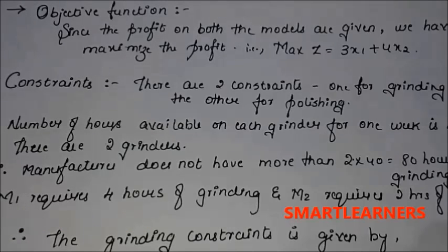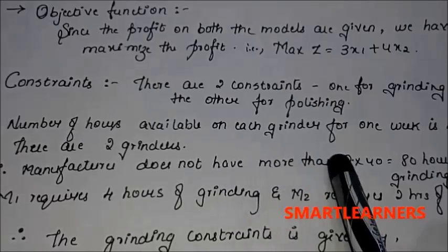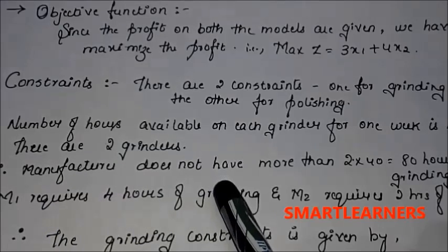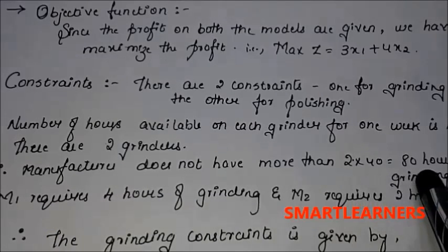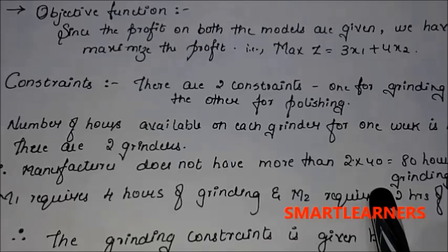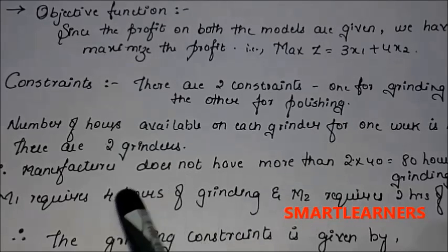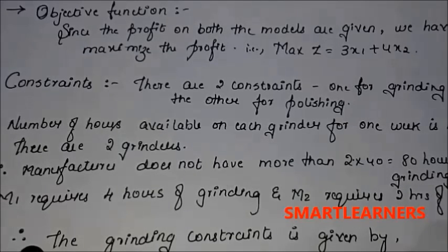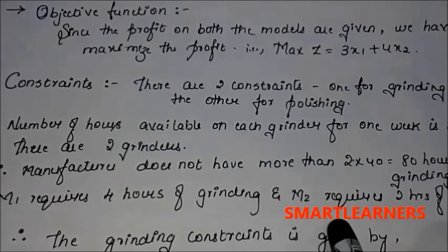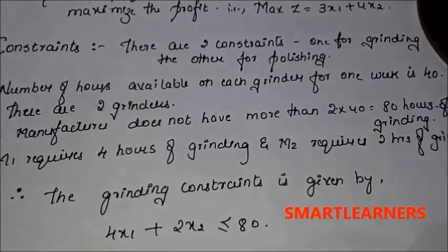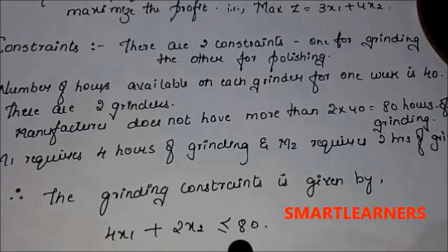Step three — constraints. There are two constraints: one for grinding and one for polishing. For grinding: the number of grinders available is two, and each grinder works 40 hours a week, so the total grinding hours available is 2 × 40 = 80 hours. M1 requires four hours of grinding and M2 requires two hours of grinding. Therefore the grinding constraint is: 4x1 + 2x2 ≤ 80.